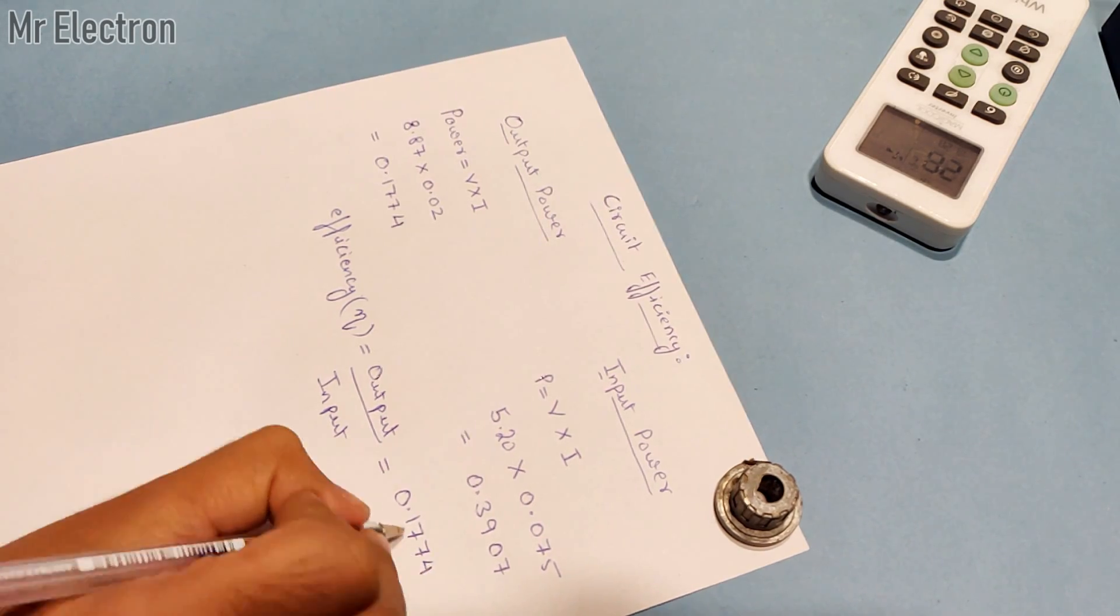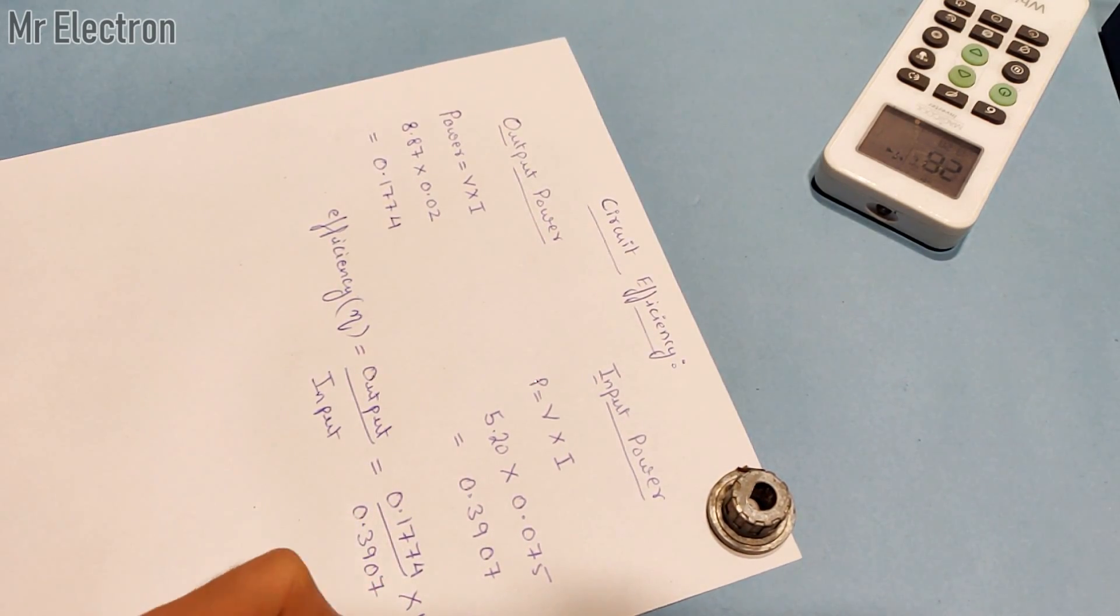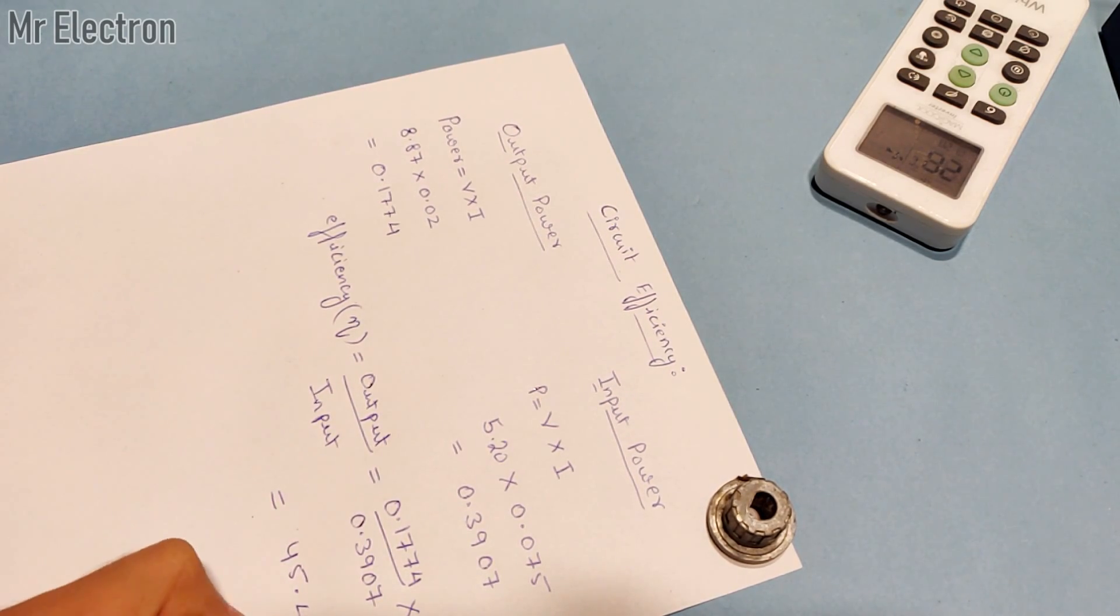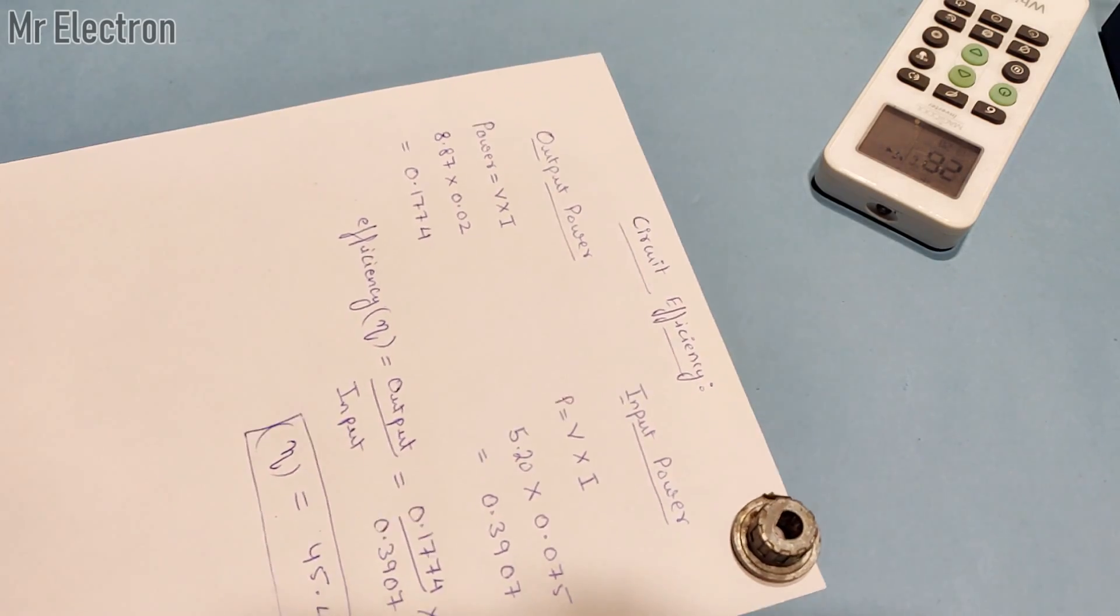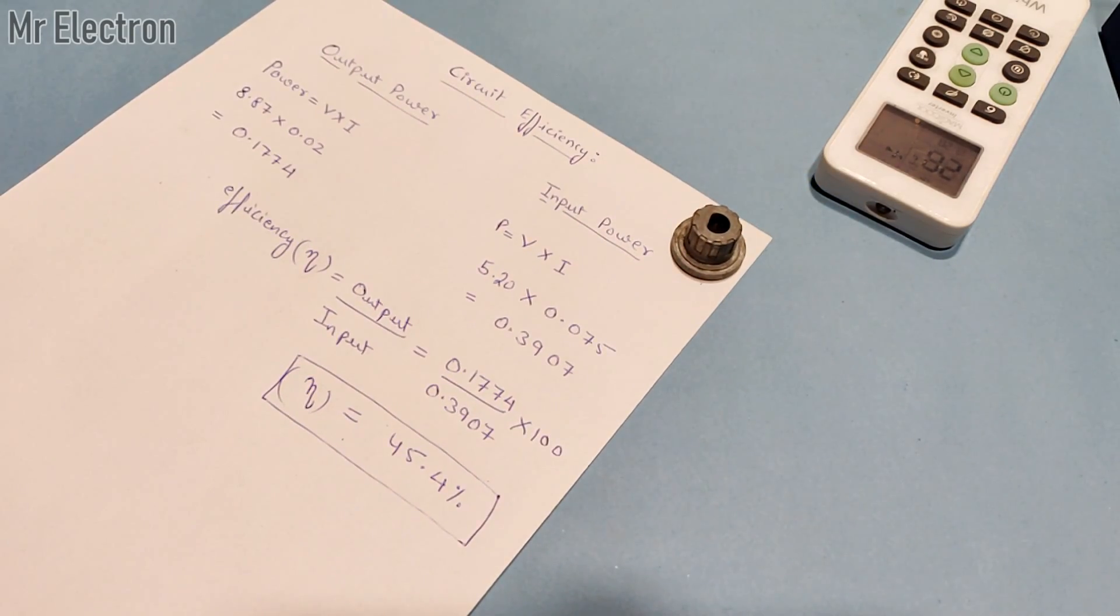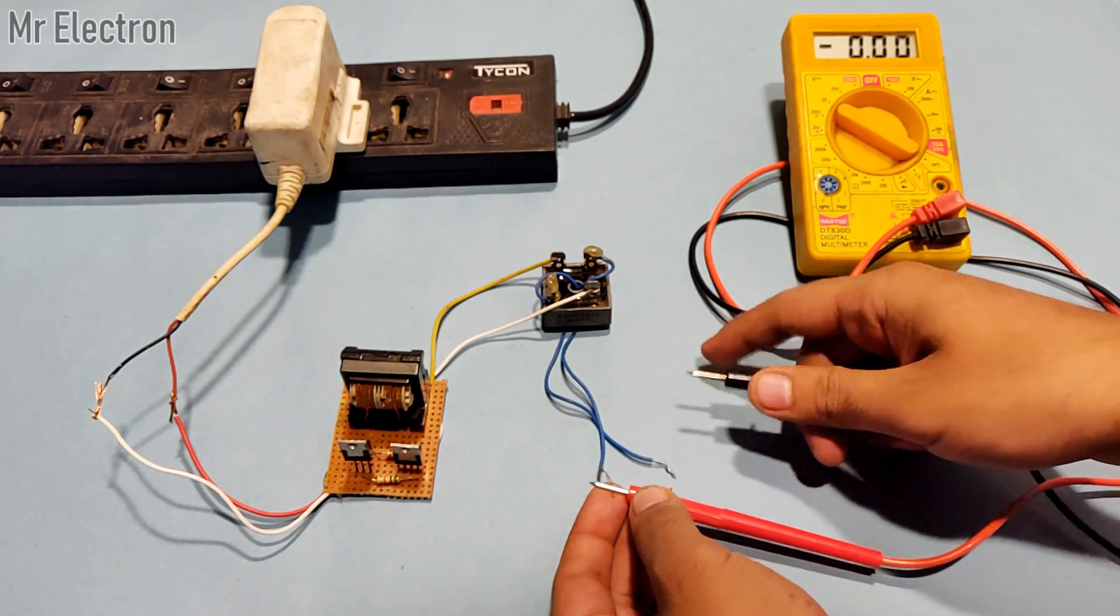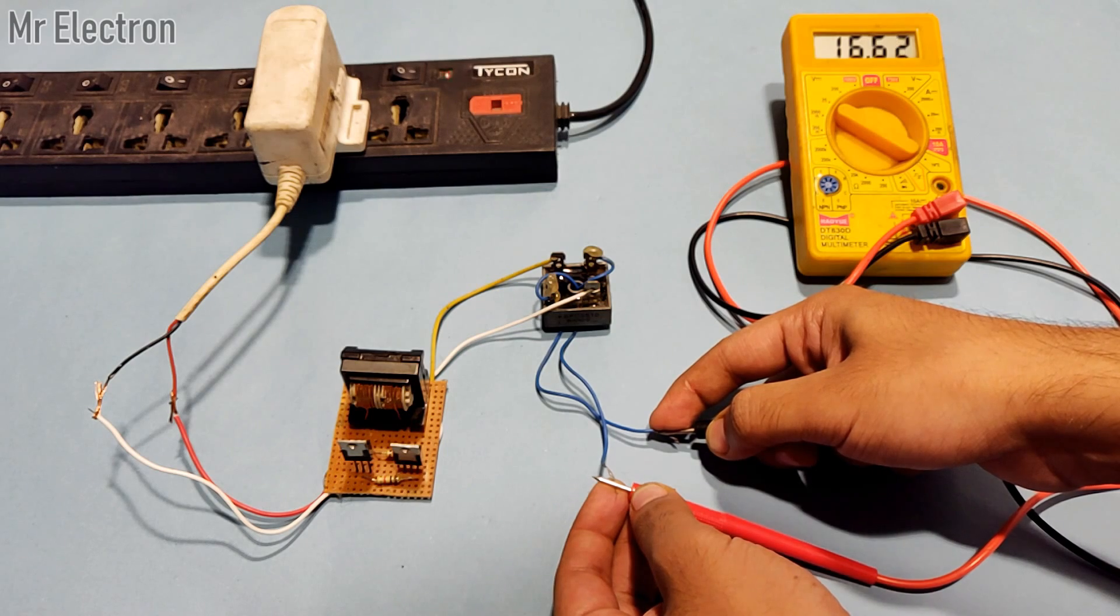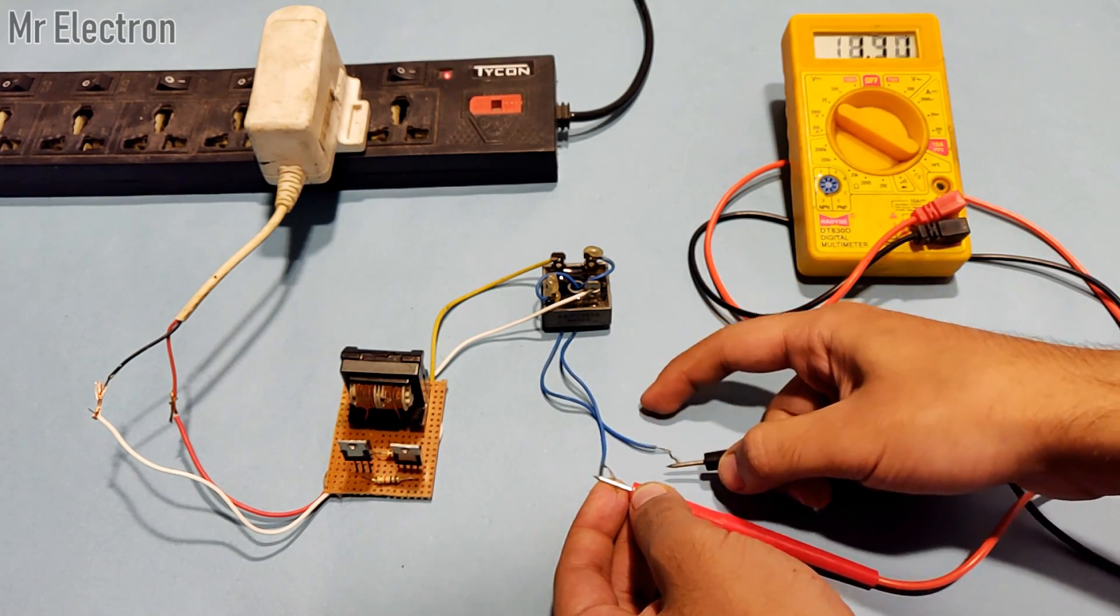So it is 45.4 percent. As you can see, at present the efficiency is not that good, it is 45.4 percent, but we can really improve that efficiency at least to 75 percent or more. So let me check how much voltage the circuit is actually producing when I connect it to a mobile charger, and that will give me an idea if the efficiency that I measured is the best efficiency possible or if it is overloaded or underloaded.